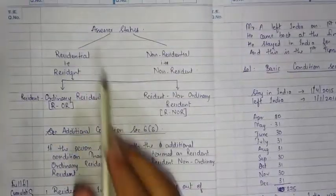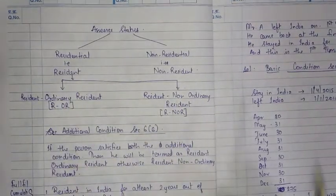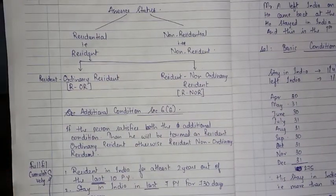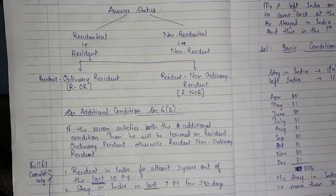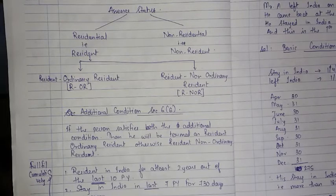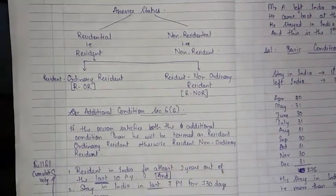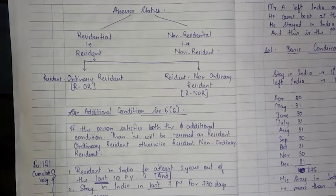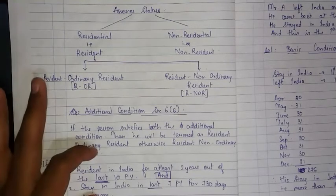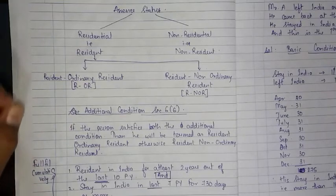SEC status is determined as resident or non-resident. If the SEC is a resident, then to determine whether they are Resident Ordinary Resident (ROR) or Resident Non-Ordinary Resident (RNOR), we check the additional conditions under Section 6, subsection 6. Both additional conditions must be fulfilled cumulatively: (1) resident in India for at least 2 years out of the last 10 previous years, AND (2) stay in India in the last 7 previous years for 730 days or more.